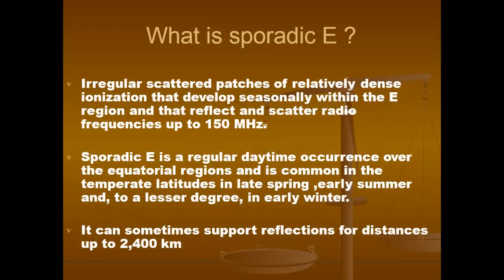Sporadic E consists of irregular scattered patches of relatively dense ionization that develop sporadically within the E region and reflect or scatter radio frequencies up to 150 MHz. Sporadic E is a regular daytime occurrence over equatorial regions and is common in temperate latitudes in late spring, early summer, and to a lesser degree in early winter. It can sometimes support reflections for distances up to 2400 km.